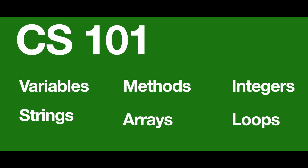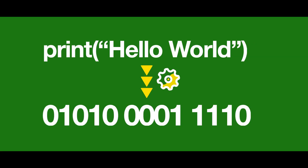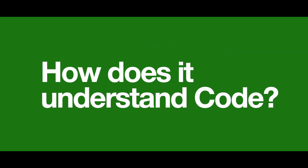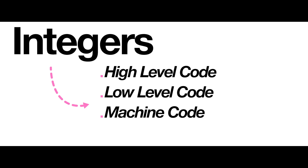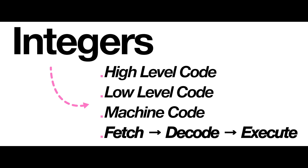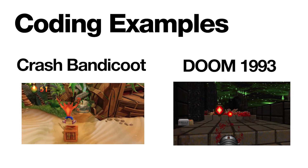You start off your semester with an introduction to programming, you write your first application, but you start wondering: if computers speak only in binary, how does it understand code? To answer this, we are going to discuss how computers understand code using integers as our starting point, followed by two coding examples from well-known video games.